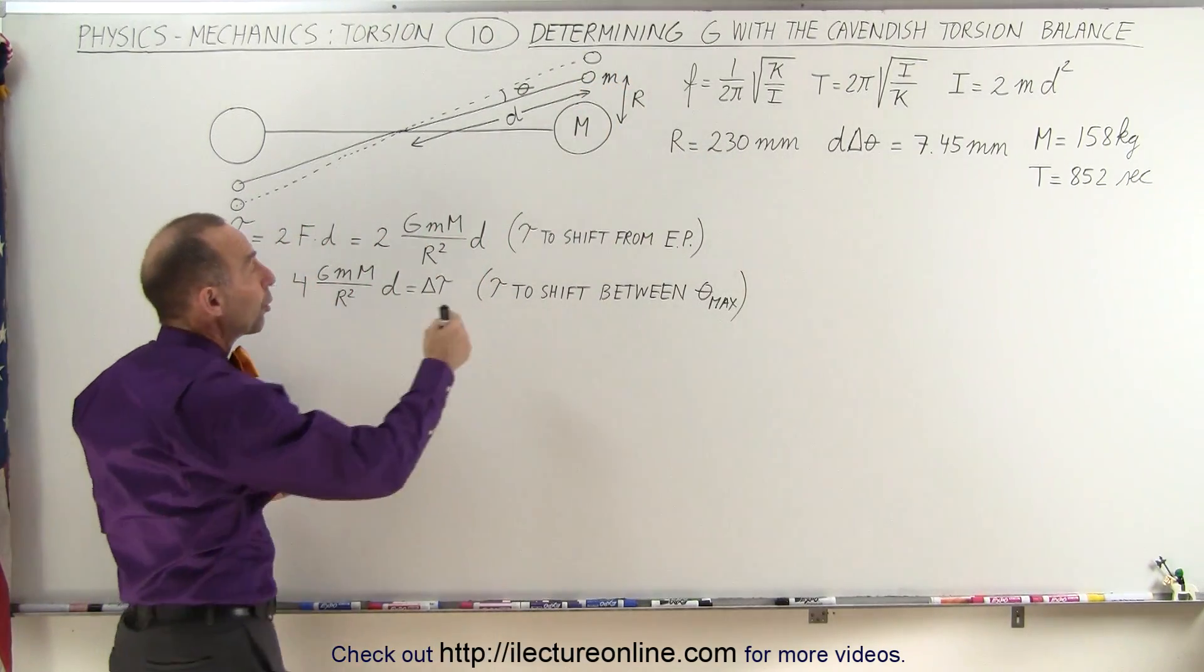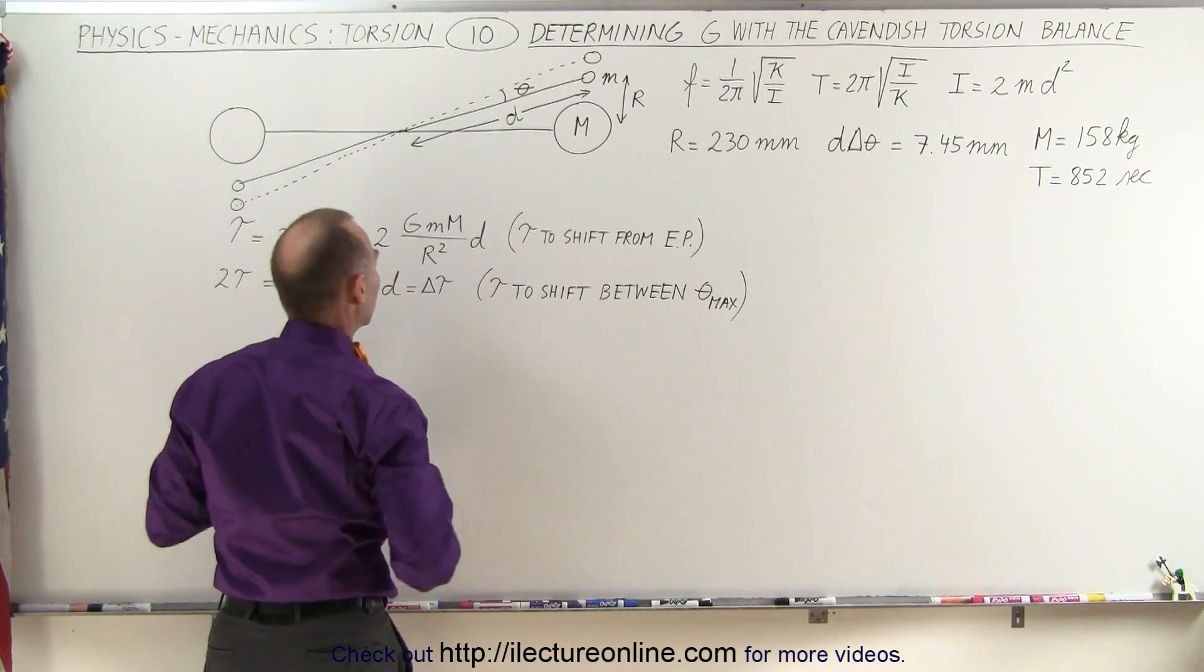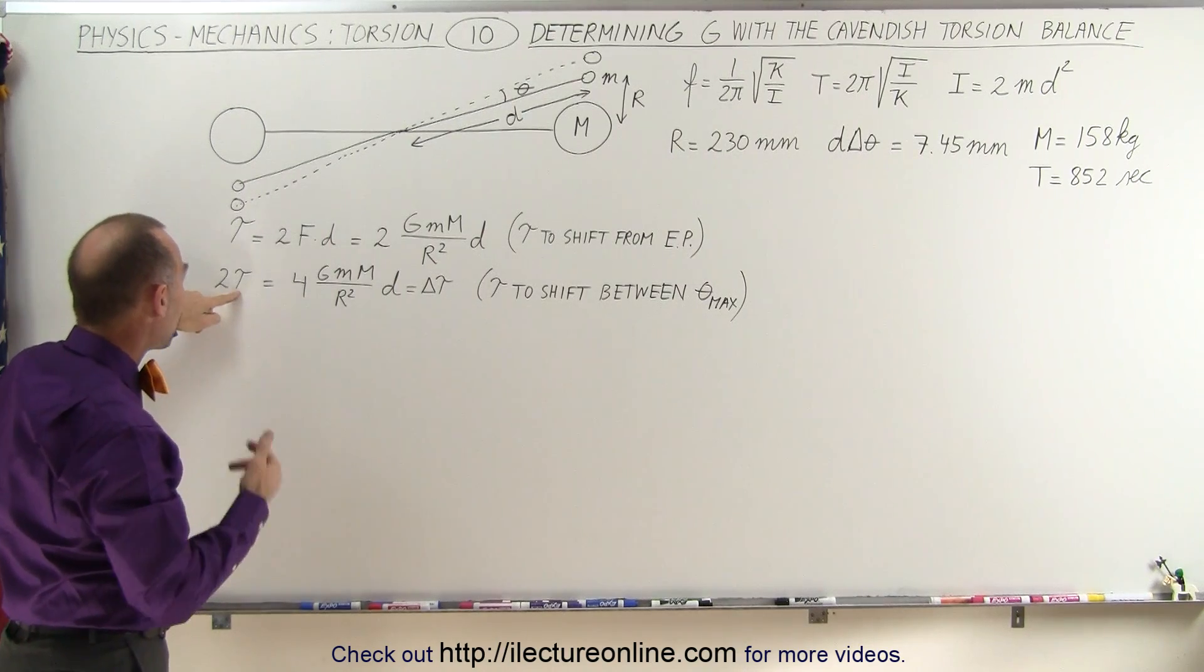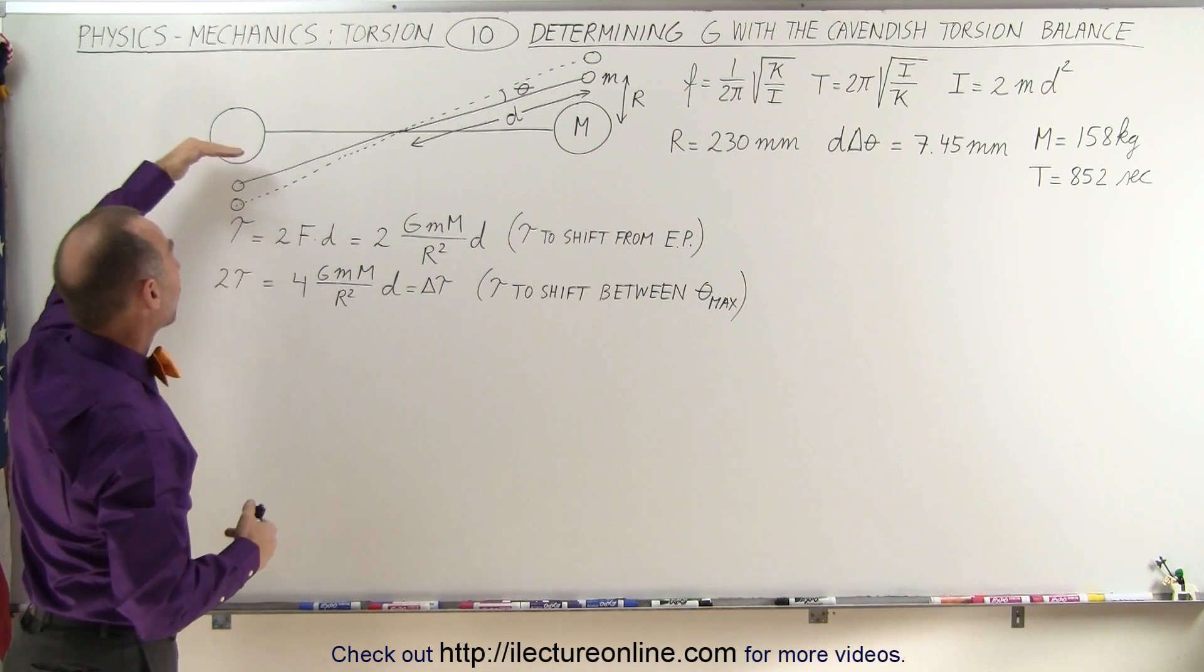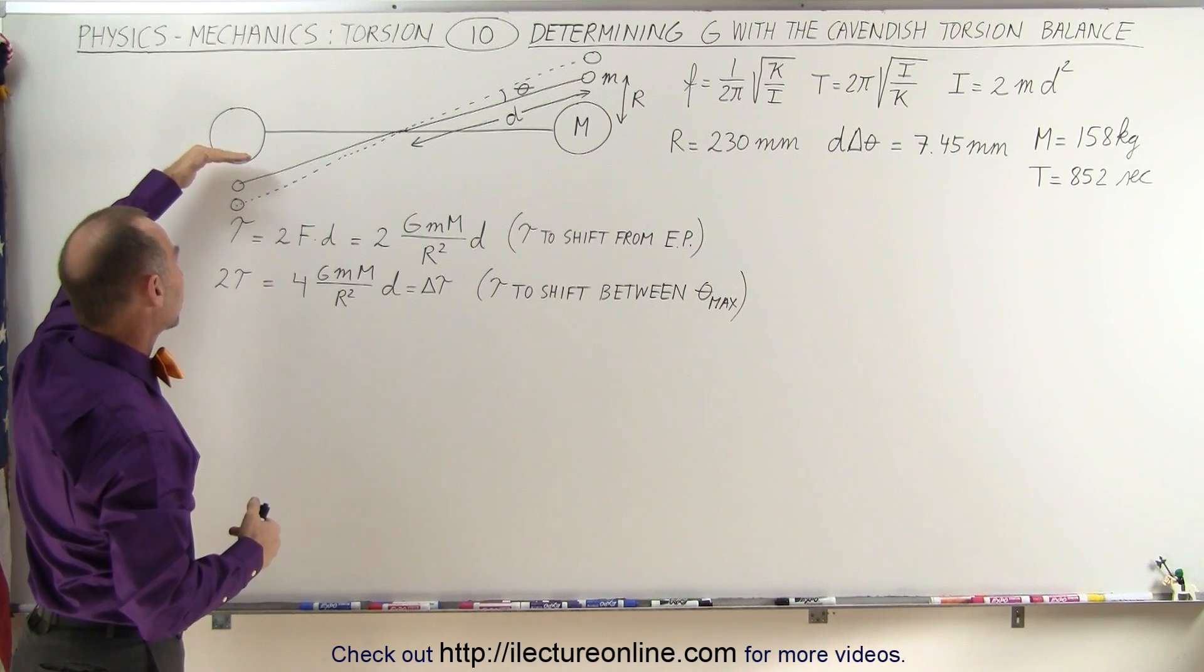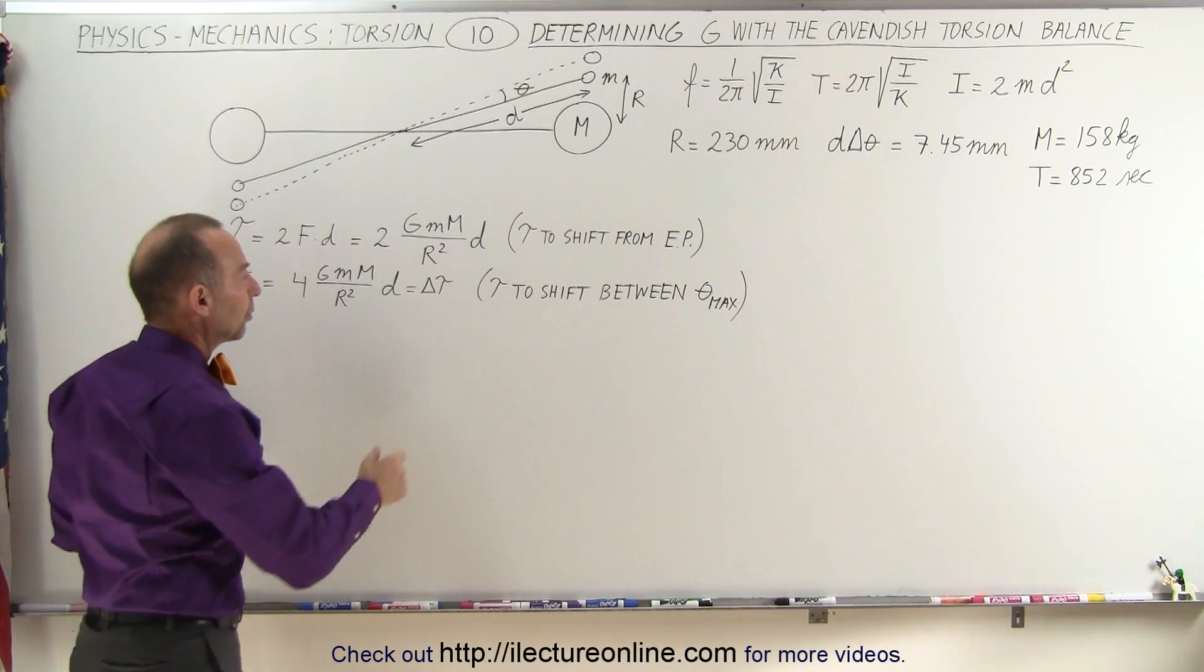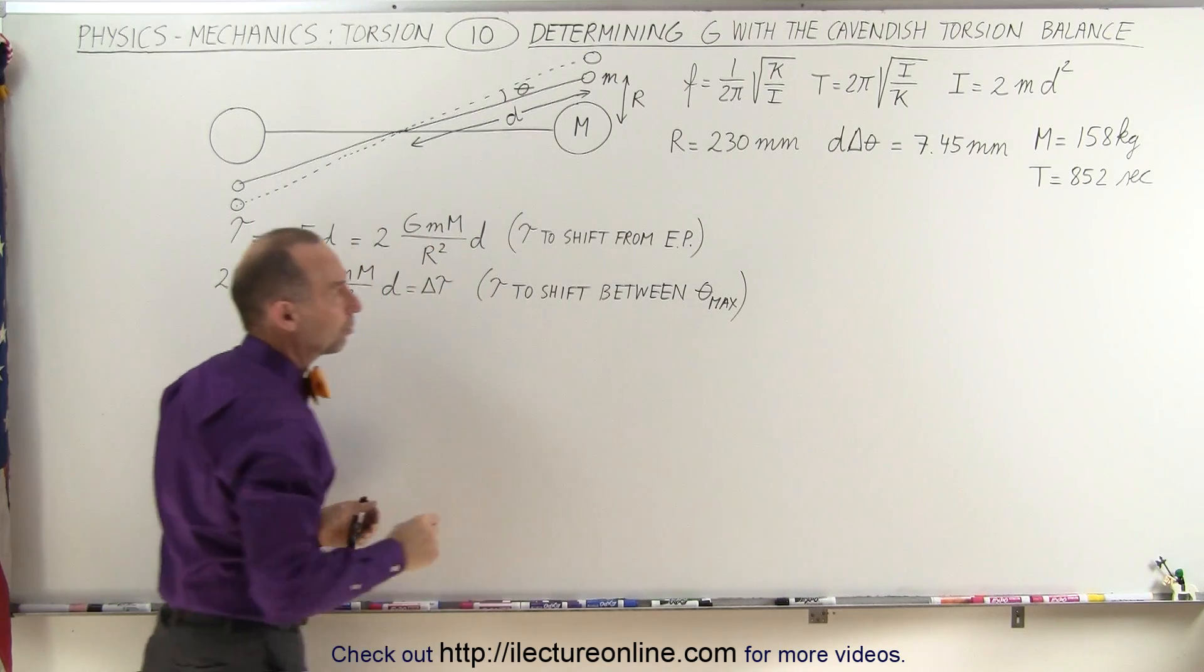Let's assume that that is equal to R from center mass to center mass. That is the torque required to shift from the equilibrium point to the maximum displacement. Therefore, the total delta T or delta torque that we are looking for would be twice that amount because it would have to go away from the equilibrium point in one direction and away from the equilibrium point in the other direction.